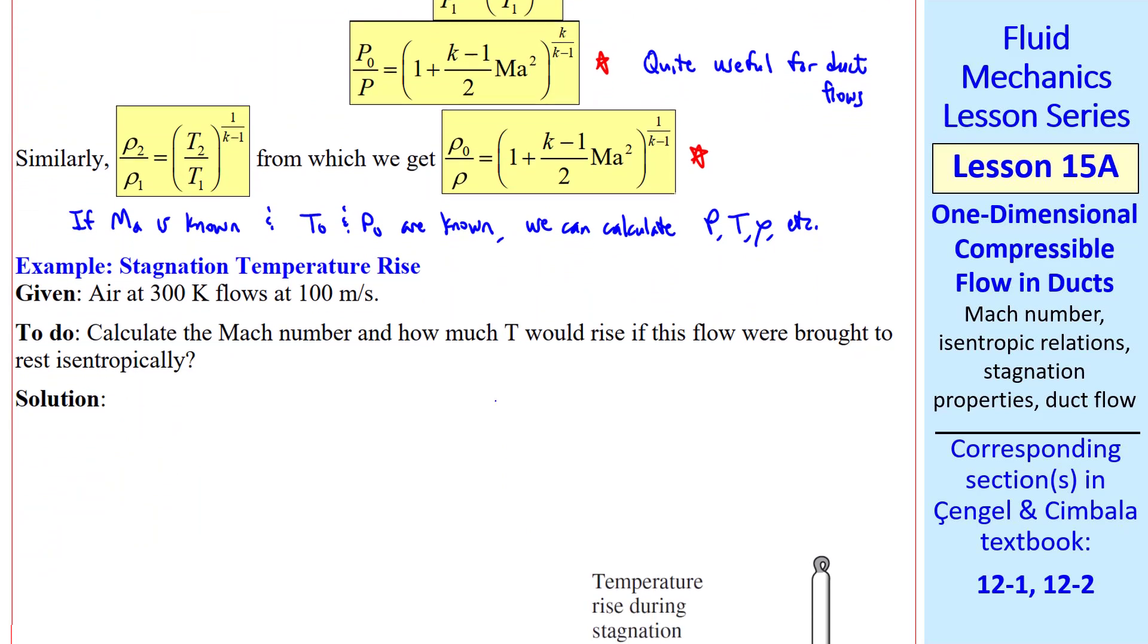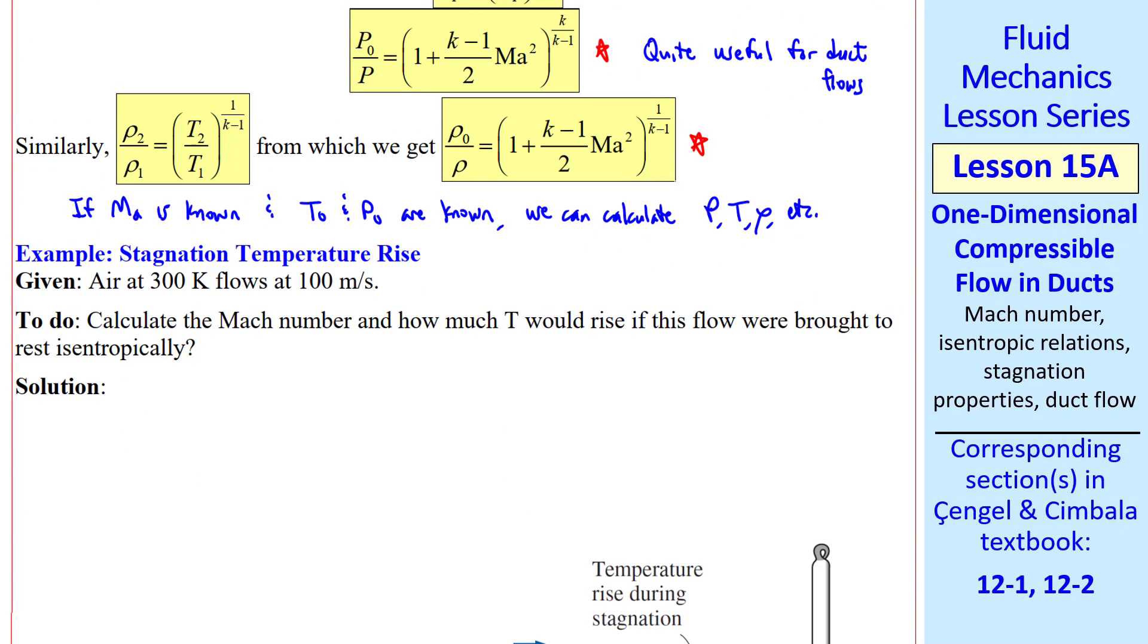To give you an idea of how much stagnation temperature rises compared to the static temperature, consider air at 300K flowing at 100 meters per second. We want to calculate the Mach number and how much T would rise if this flow were brought to rest isentropically.